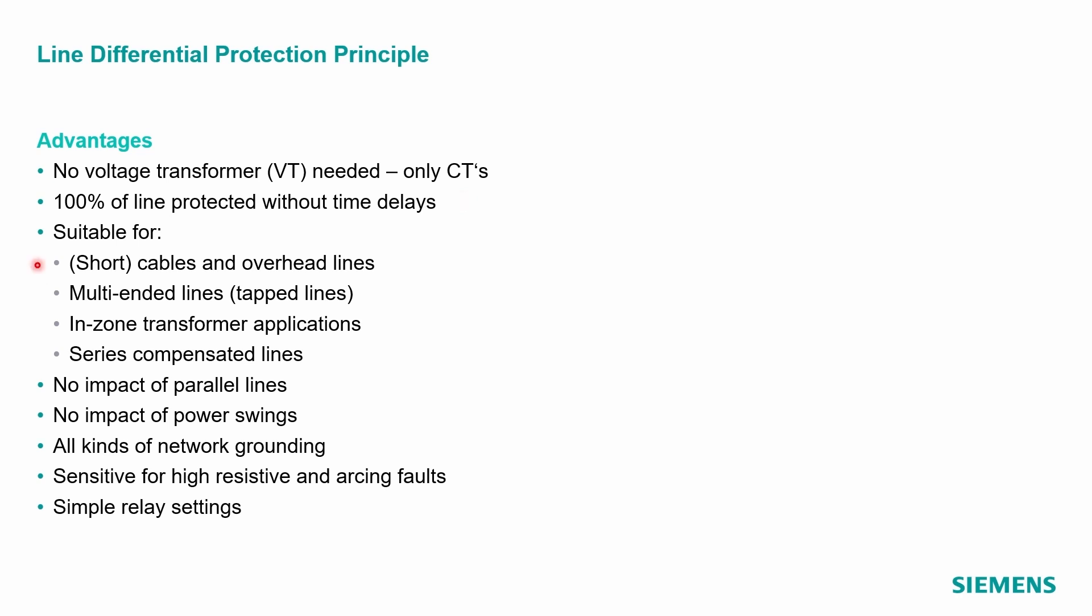Therefore, it's suitable for short cables or overhead lines. It's also possible to use it for multi-ended lines, so tapped lines, and also applications with a transformer in the protected zone, or for serious compensated lines. There is no impact for parallel line switching states or power swings. All kind of network grounding can be considered. It's very sensitive for high resistive or arcing faults. And finally, the relay settings are quite simple.